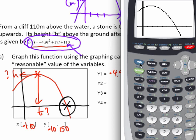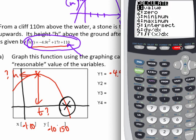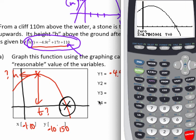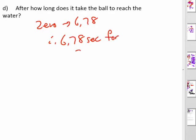And now I'm going to use the zero button under the calculate menu. Second function calculate. Number two. Zero. Move it to the left of the zero. Move it to the right of the zero. Move it close to the zero. And press enter. So it's 6.78 is the zero. Which means it takes 6.78 seconds for the ball to reach the water.